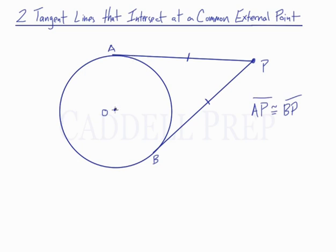We could also draw the radius here, and a radius from O to B as well. So we know that a tangent line and a radius are perpendicular to each other. So this is a right angle, and this is also a right angle.